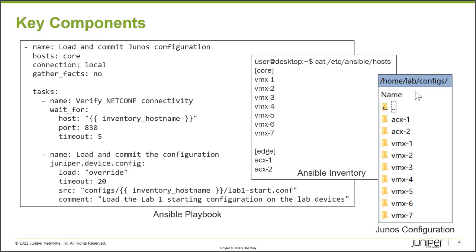In the configs folder, it's important that you name the directories that store the configuration the same as the name you listed for that host in the Ansible inventory file. When you run this playbook for each device in the core inventory group, it's going to find a matching directory. And in that inventory_hostname directory, that's the config file you want it to load. You can deploy different configuration by simply specifying a different config file and reuse this playbook over and over again.